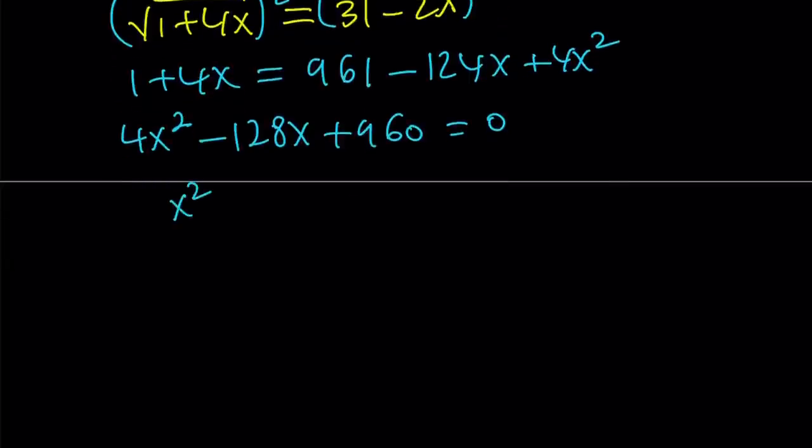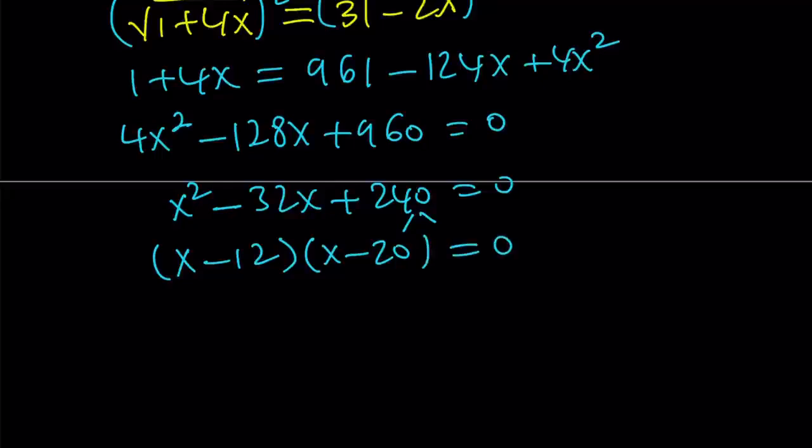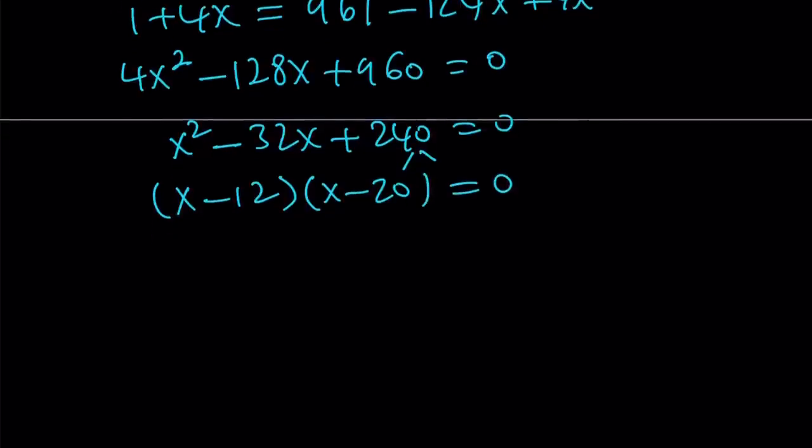We're going to get x squared minus 32x plus 240 is equal to 0. Now, our goal is to find two numbers whose product is 240 and whose sum is negative 32. And those numbers are easily found. They are 12 and 20. So, we can write this as x minus 12 times x minus 20 equals 0. And from here, we get two solutions. And I'm going to talk about why we get two solutions. Obviously, one of them is not going to work because we're looking for a certain numerical value.